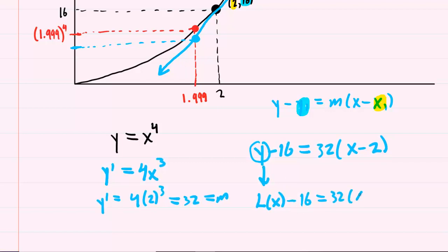And now, as we stated, we're going to plug in the x coordinate of this blue point, the 1.999, in for x.